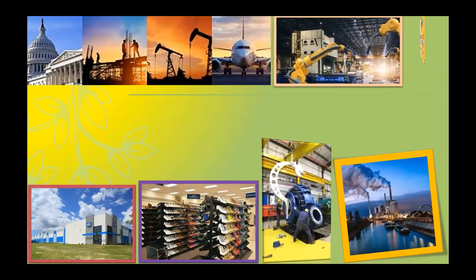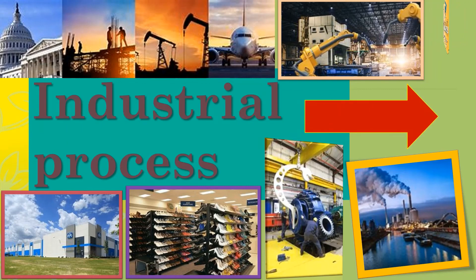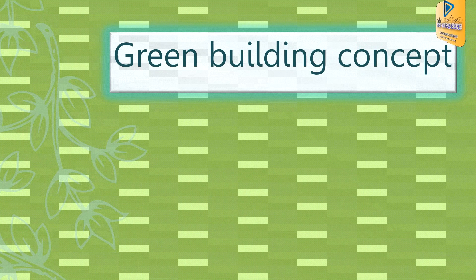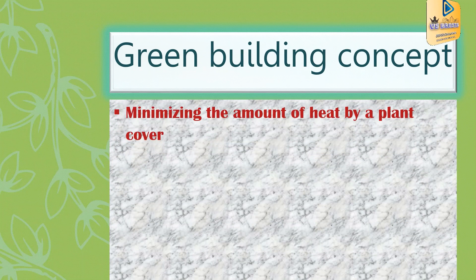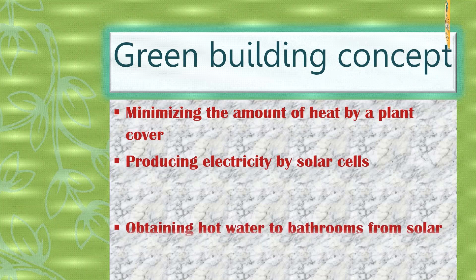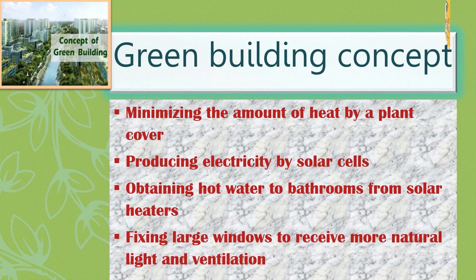In the agricultural process, we will now discuss about industrial process. About the content of green business: minimizing the amount of heat by plant power, producing electricity by solar cells, obtaining hot water from solar heaters, and installing large windows to receive more natural light and ventilation.